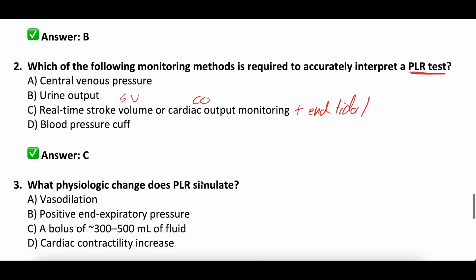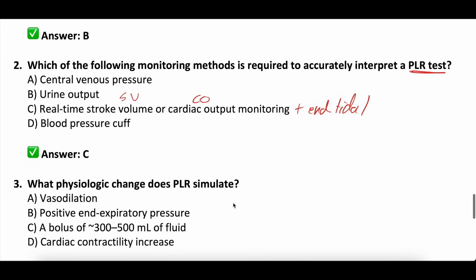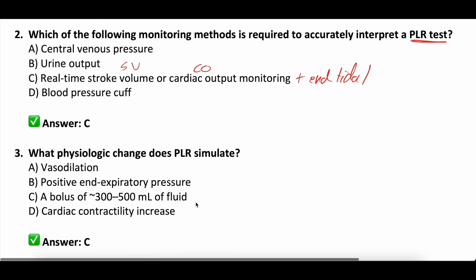Question three: what physiologic change does passive leg raise simulate? A) vasodilation, B) PEEP, C) a bolus of 300 to 500 cc of fluid, or D) a cardiac contractility increase? The correct answer is C — a bolus of 300 to 500 cc of fluid. That's the beauty of the passive leg raise: you put their legs above their head and bolus their heart 300 to 500 cc without actually giving them any fluid.